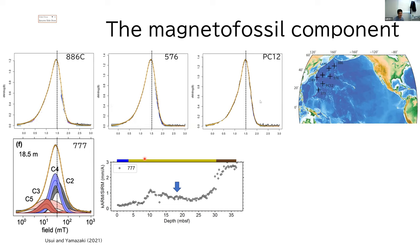The above three graphs show simple IRM acquisition gradients for magnetofossil-rich samples selected based on high ARM susceptibility. As you see, even though these are from different sites, they are remarkably similar to each other.